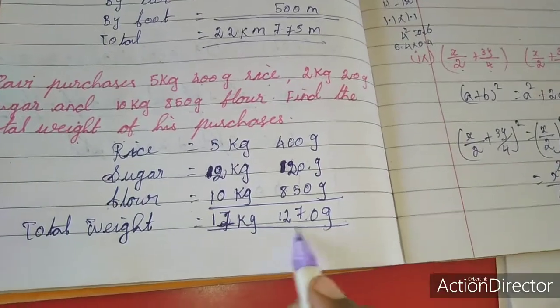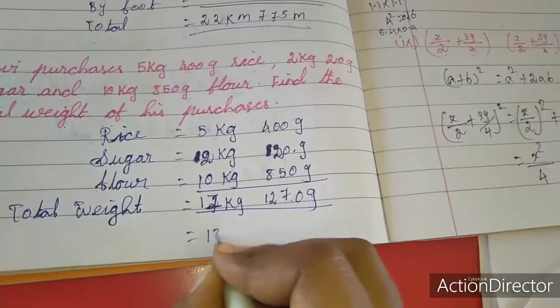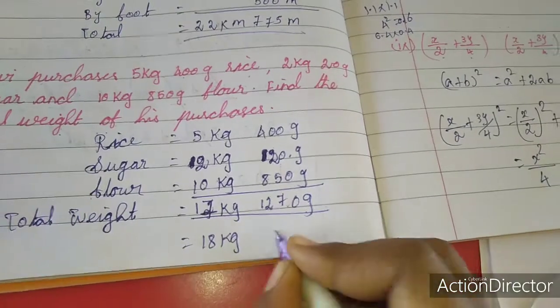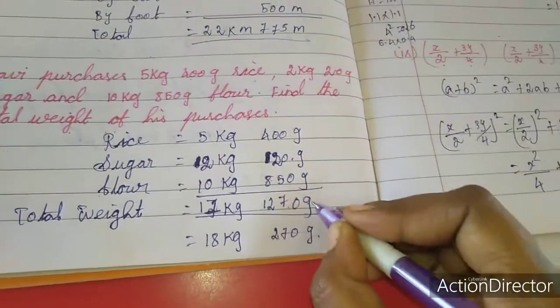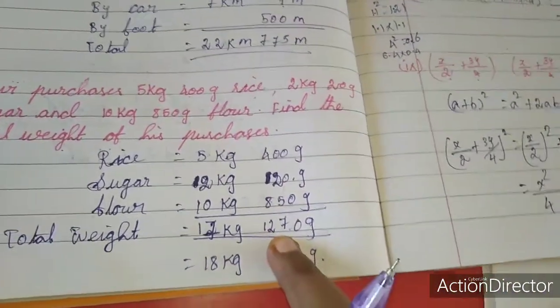So this 1270 g has 1 kg, so here we have to add. We have to add 18 kg 270 g. This is the answer.